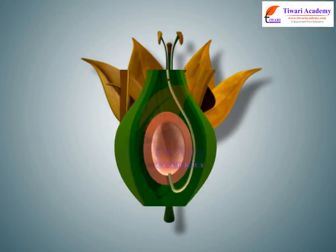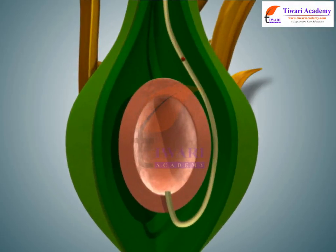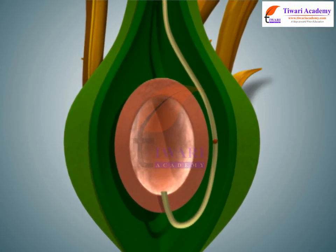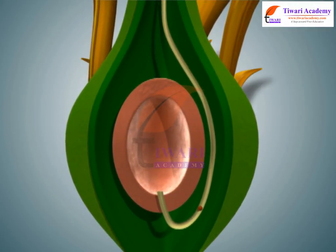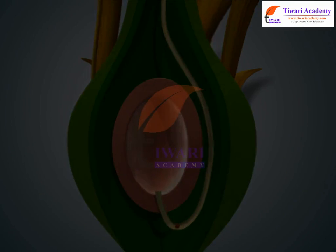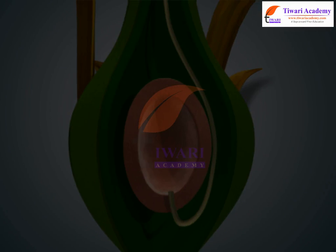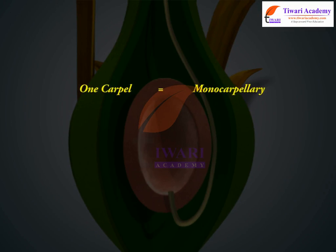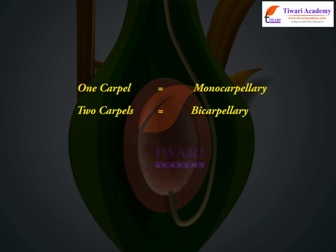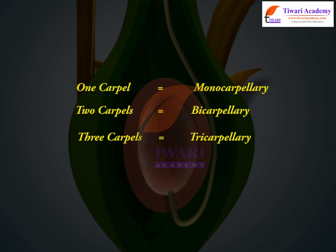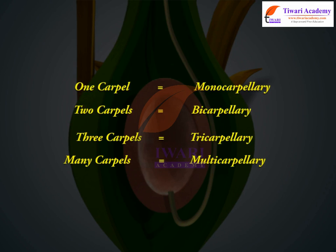The female reproductive part of the flower is called gynesium. It may consist of only one carpal (monocarpillary), two carpals (bicarpillary), three carpals (tricarpillary), or many carpals (multicarpillary).